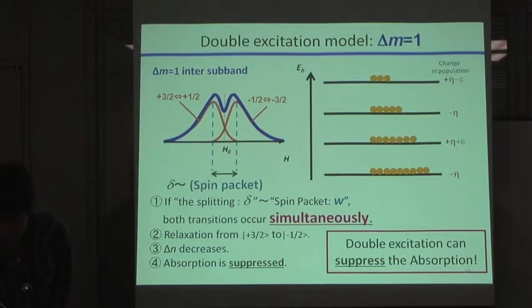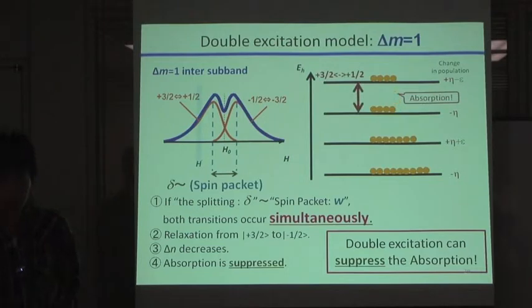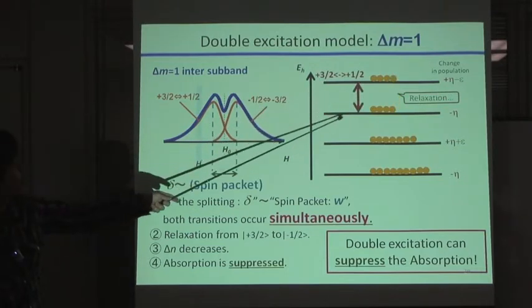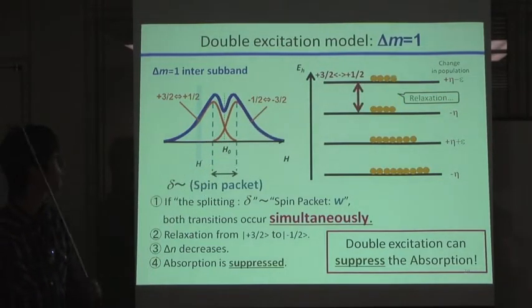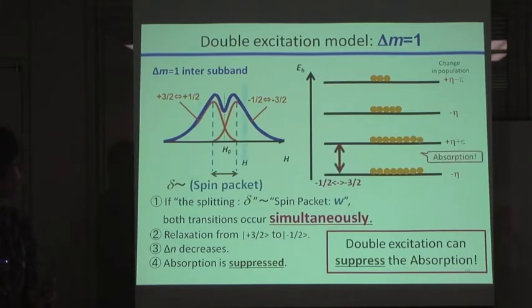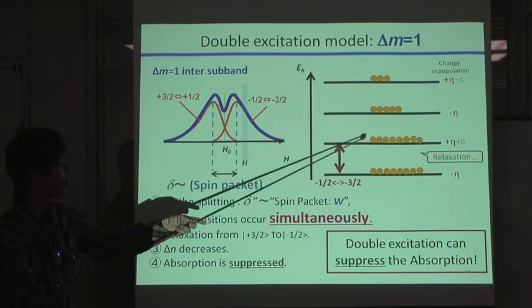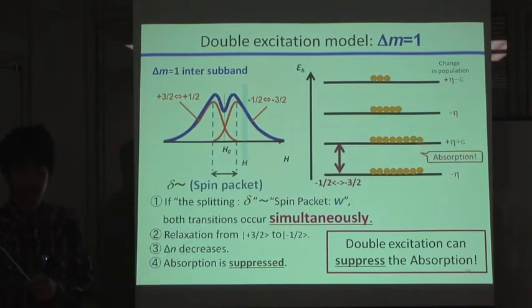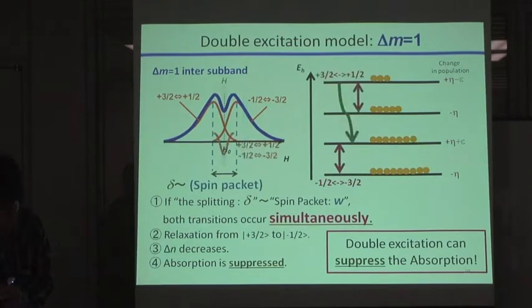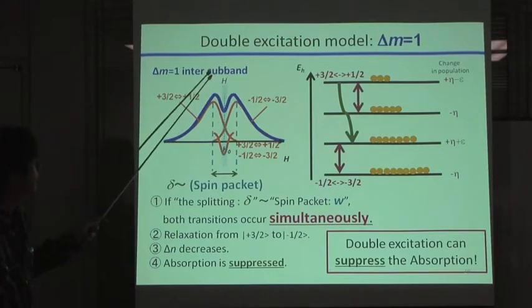Now, if you apply a magnetic field corresponding to here, only this transition is induced. And if you apply a magnetic field here, only this resonance is induced. Then, if you apply a magnetic field at the center point, what will occur?